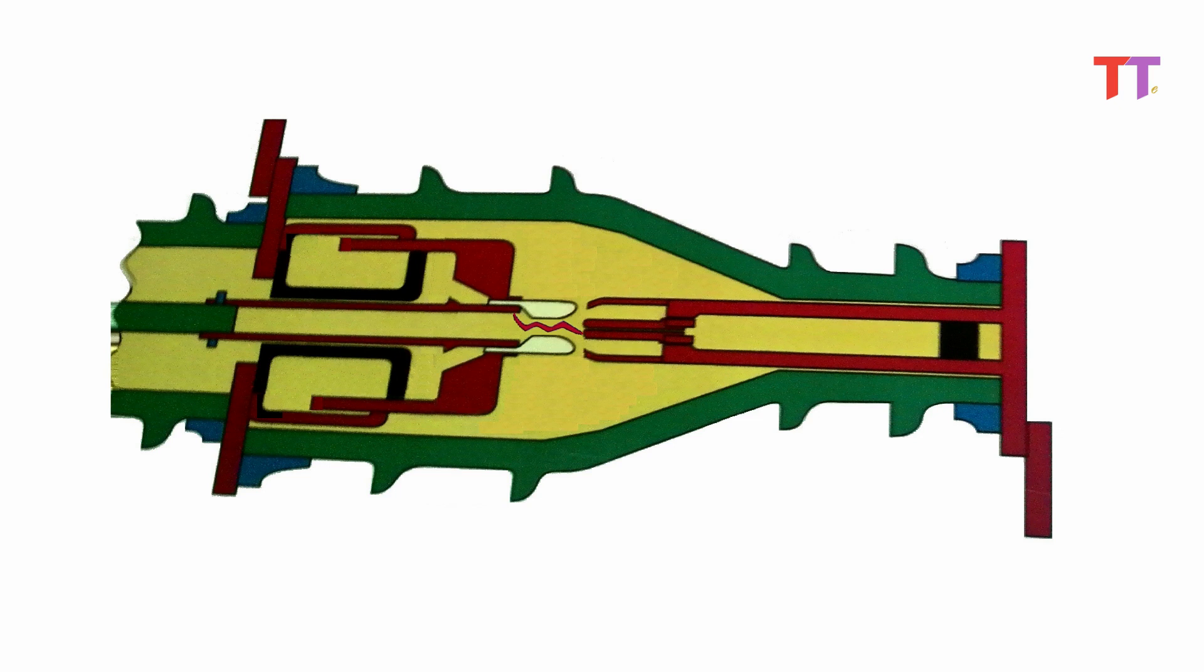Firstly, main contacts open, and then arc contacts open. Hence arc is produced between arc contacts. During this time SF6 accumulated between main contacts and pistons, gets compressed due to contact movement, is pushed into the arc region through nozzle.